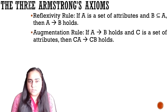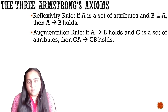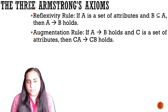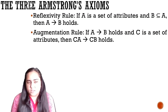The augmentation rule says that if A determines B holds and C is a set of attributes, then you can augment — attach C on both the left and right sides of the functional dependency — making it AC determines BC. C can be either one attribute or a set of attributes.